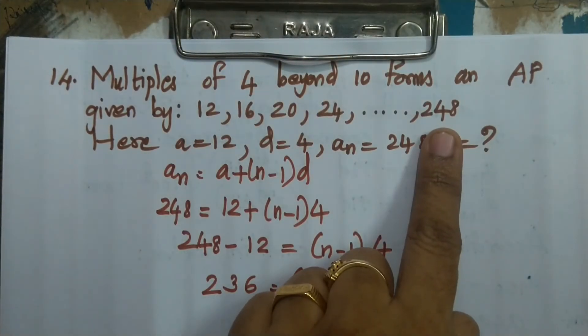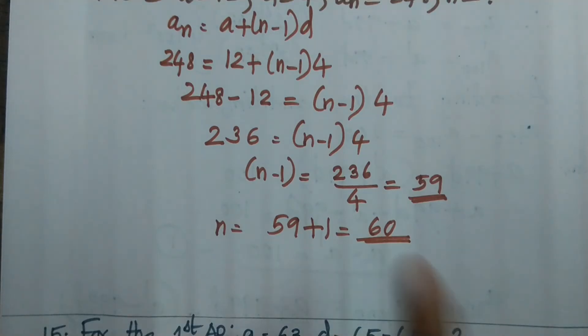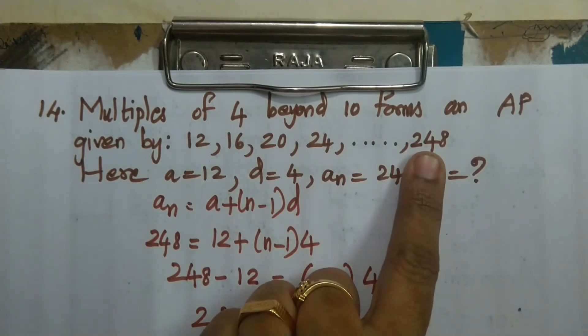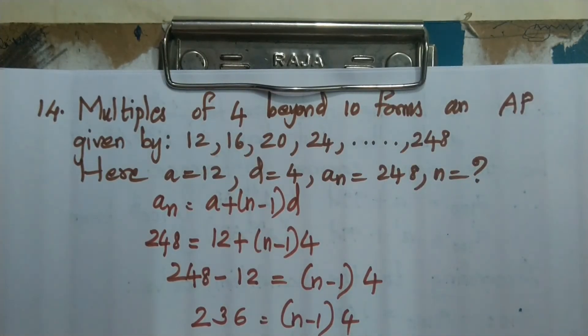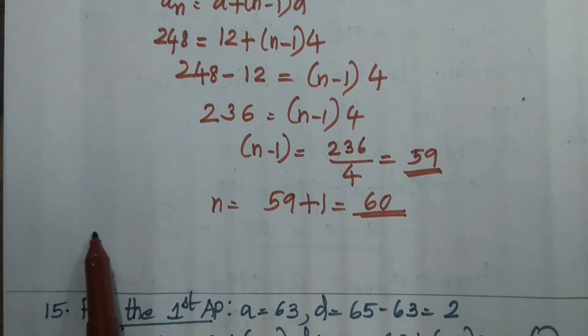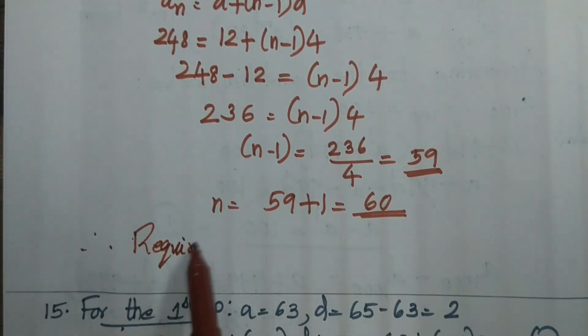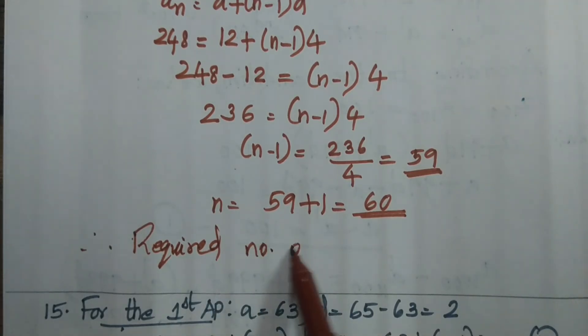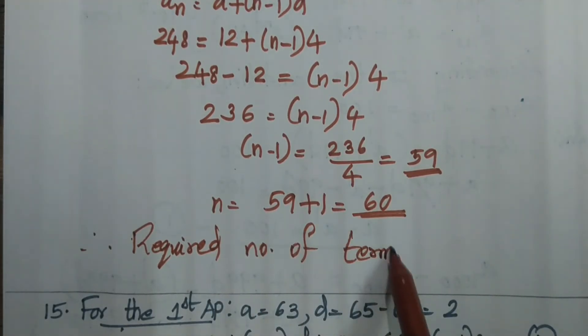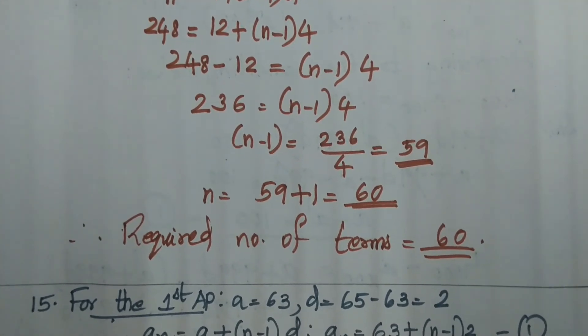So how many terms are there from 12 to 248? 60 terms. Because this is 60 terms. Therefore, required number of terms equal to 60. Conclusion. Answering our steps are at the same time.